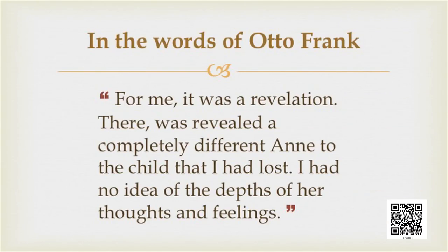In the words of Otto Frank: 'For me it was a revelation. There was revealed a completely different Anne to the child that I had lost. I had no idea of the depths of her thoughts and feelings.' He realized that at the age of 13, or 15 since she wrote for two years, she was writing like a mature person. Her observations were very mature — she was looking at things from a perspective, and her observations were not childish. Therefore, he said he found another aspect of his child Anne whom he had lost.